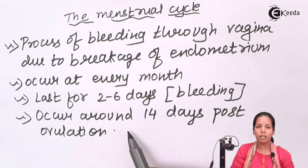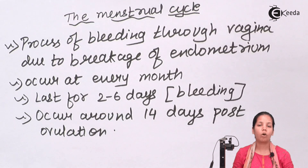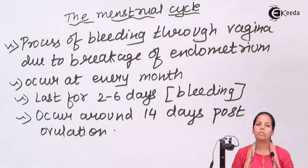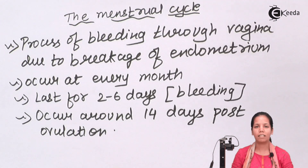The menstrual cycle occurs around day 14 and involves a number of phases during which hormone levels — such as progesterone, FSH, and estrogen — vary significantly. In this part of the chapter we covered the menstrual cycle, and I hope you are clear with this concept.